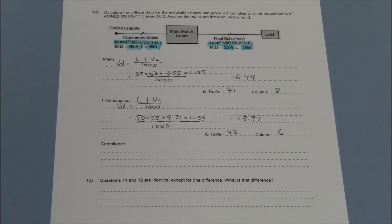AS3000 states that voltage drop shall be such that it does not exceed 5% between a point of supply and any other point within the electrical installation. In a single phase installation that value is no greater than 11.5 volts.